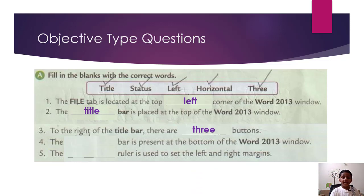Fourth, the status bar is present at the bottom of the Word 2013 window. So the correct answer is status bar. The horizontal ruler is used to set the left and right margins. So the answer is horizontal.